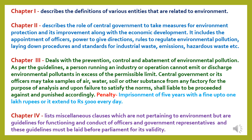Chapter 3 deals with the prevention, control and abatement of environmental pollution. As per the guidelines, a person running an industry or operation cannot emit or discharge environmental pollutants in excess of the permissible limit. The central government or its officers may take samples of air, water, soils or other substances from any factory for analysis, and upon failure to satisfy the norms, the person shall be punished. The penalty is imprisonment of 5 years with a fine up to 1 lakh rupees, or it extends to 5000 rupees every day. Chapter 4 lists miscellaneous clauses which are guidelines for the functioning and conduct of officers and government representatives, and these guidelines must be laid before parliament for validity.